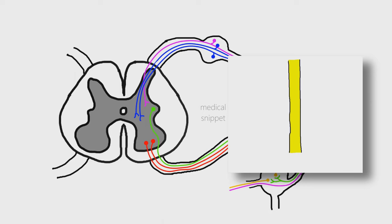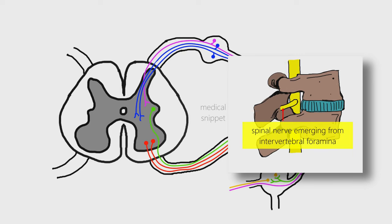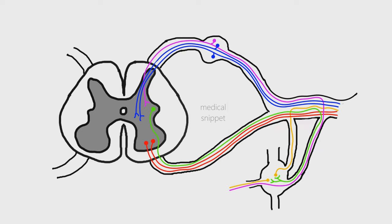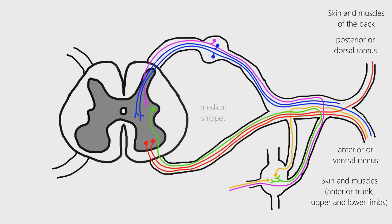The spinal nerve emerges from the spinal column through an opening called the intervertebral foramina between adjacent vertebrae. After exiting from the vertebral canal, the spinal nerves divide into two branches: the larger anterior or ventral ramus, and the smaller posterior or dorsal ramus. Generally, the ventral ramus supplies the skin and muscles of the anterior part of the trunk and the upper and lower limbs, while the dorsal ramus supplies the skin and muscles of the back.